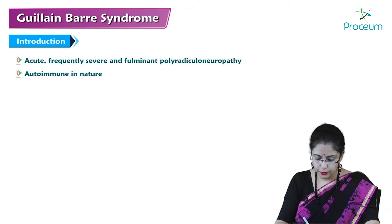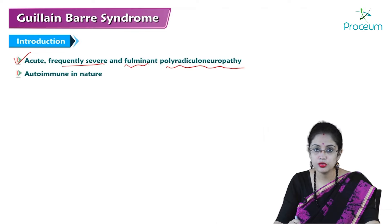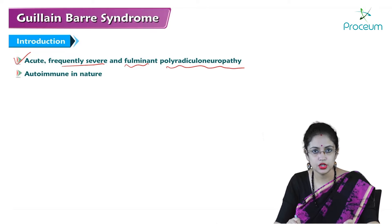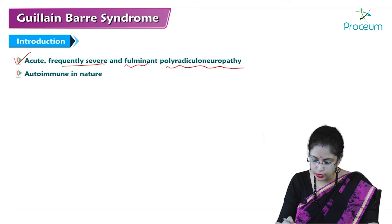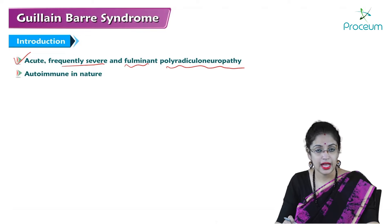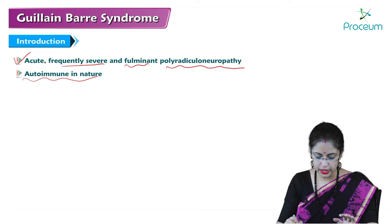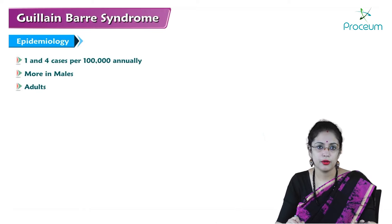It is an acute, frequently severe and fulminant polyradiculoneuropathy. Polyradiculoneuropathy means multiple radicals and peripheral nerves will be involved in this condition and it is autoimmune in nature. Autoantibody production occurs and it will act against the radicals and the neurons, ultimately resulting in polyradiculoneuropathy.